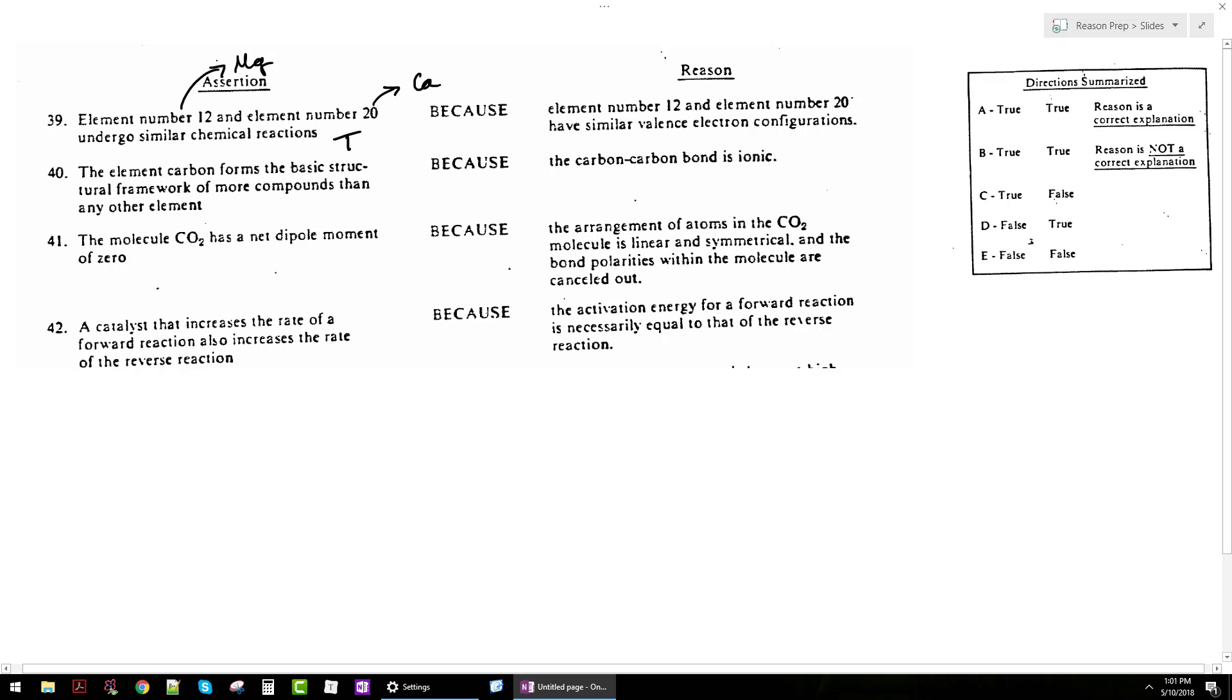Because they're both group 2, they both form +2 ions and exhibit the same kinds of chemical reactivity. The second statement says element 12 and element 20 have similar valence electron configurations. Yes, that's why they exhibit the same behavior - they both have two valence electrons, both s2: magnesium 3s2, calcium 4s2. That electron configuration causes this similarity. So not only is it true, true, this is a true, true CE. So 39 is choice A.